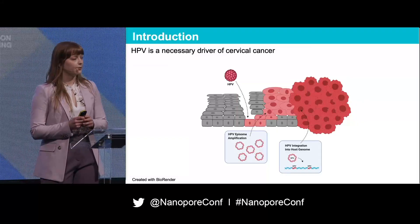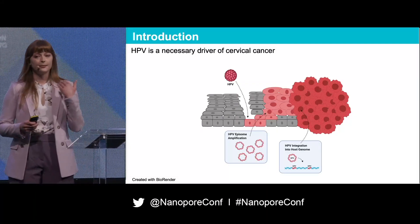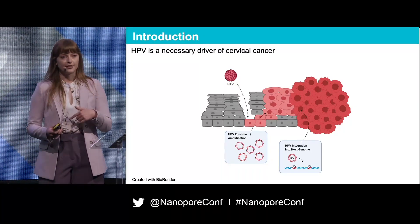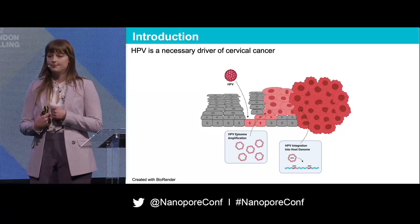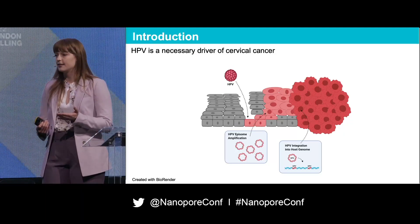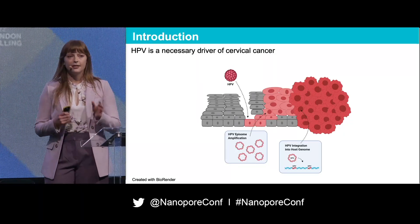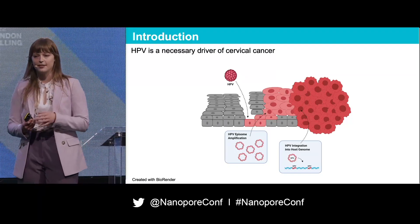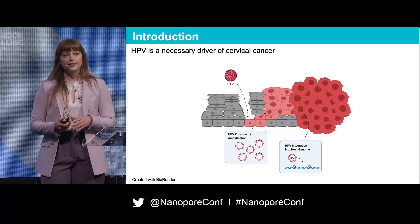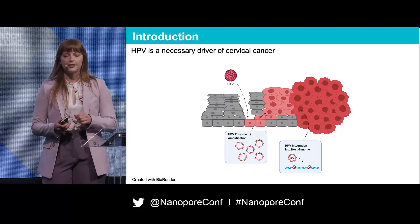HPV is necessary but not sufficient in the development of cervical cancer. The normal cervix is made up of epithelial cells that differentiate from a bottom basal layer into terminally differentiated keratinocytes in the upper layers. HPV infects the basal stem cells through micro abrasions within the cervix. Typically these infections last one to two years, but persistence of a latent infection of a high-risk HPV type can eventually lead to genetic mutations that lead to high-grade lesions.